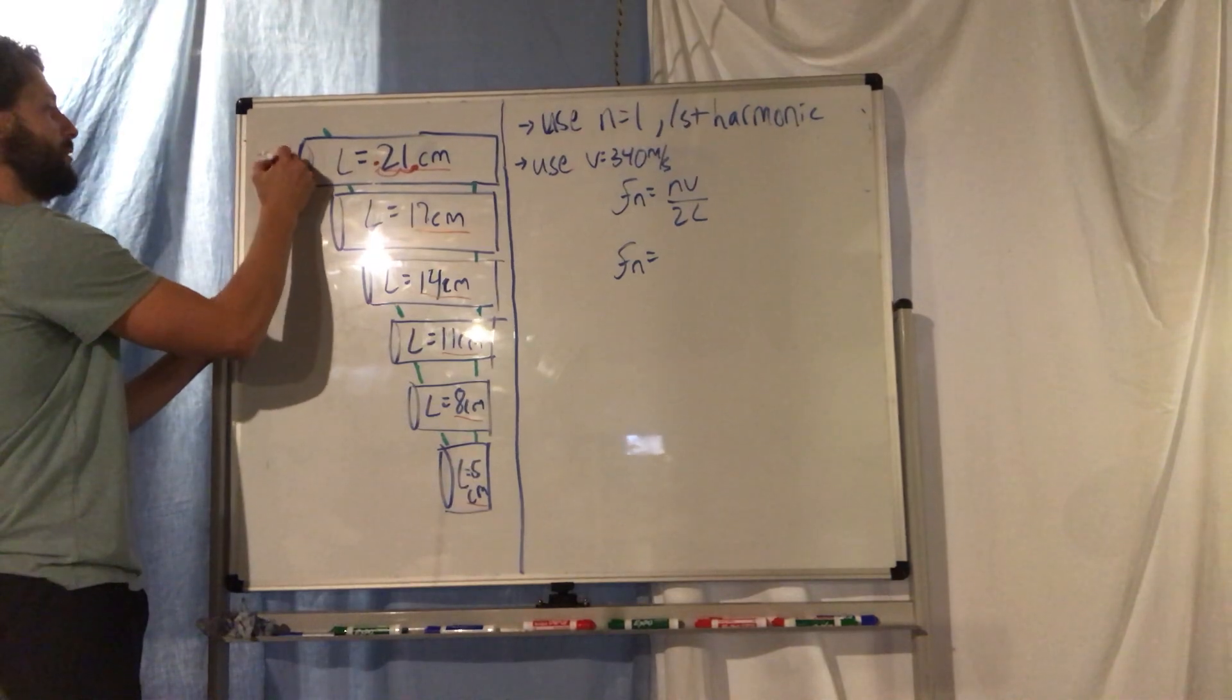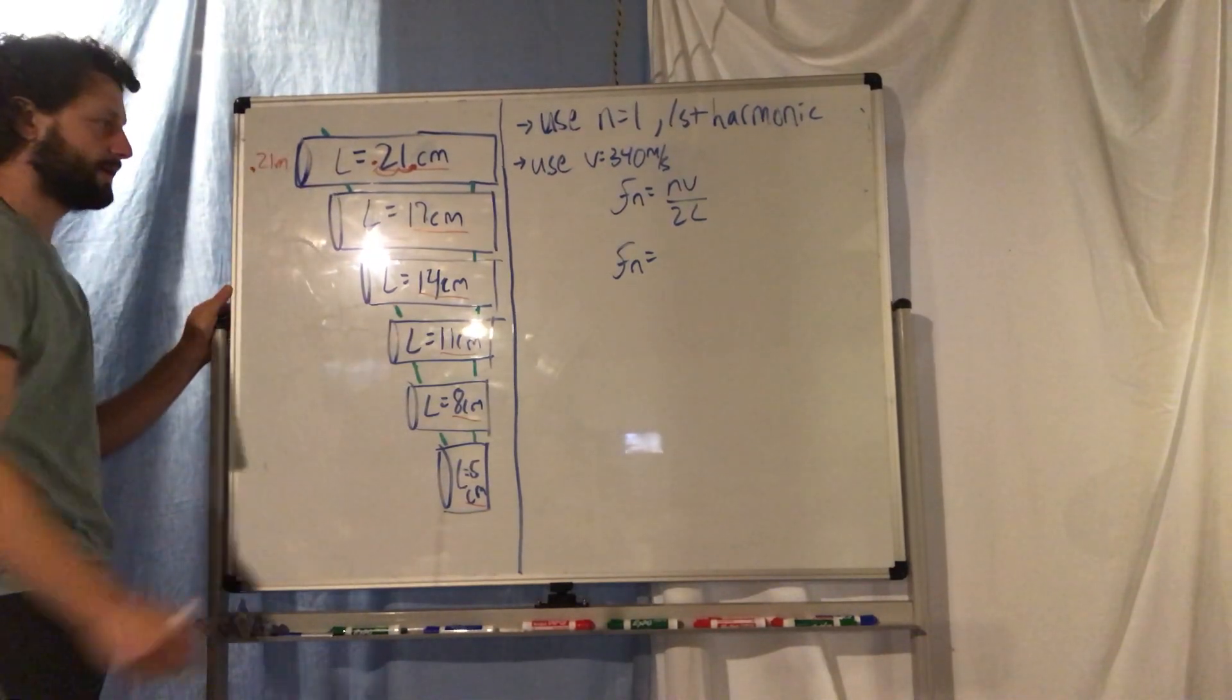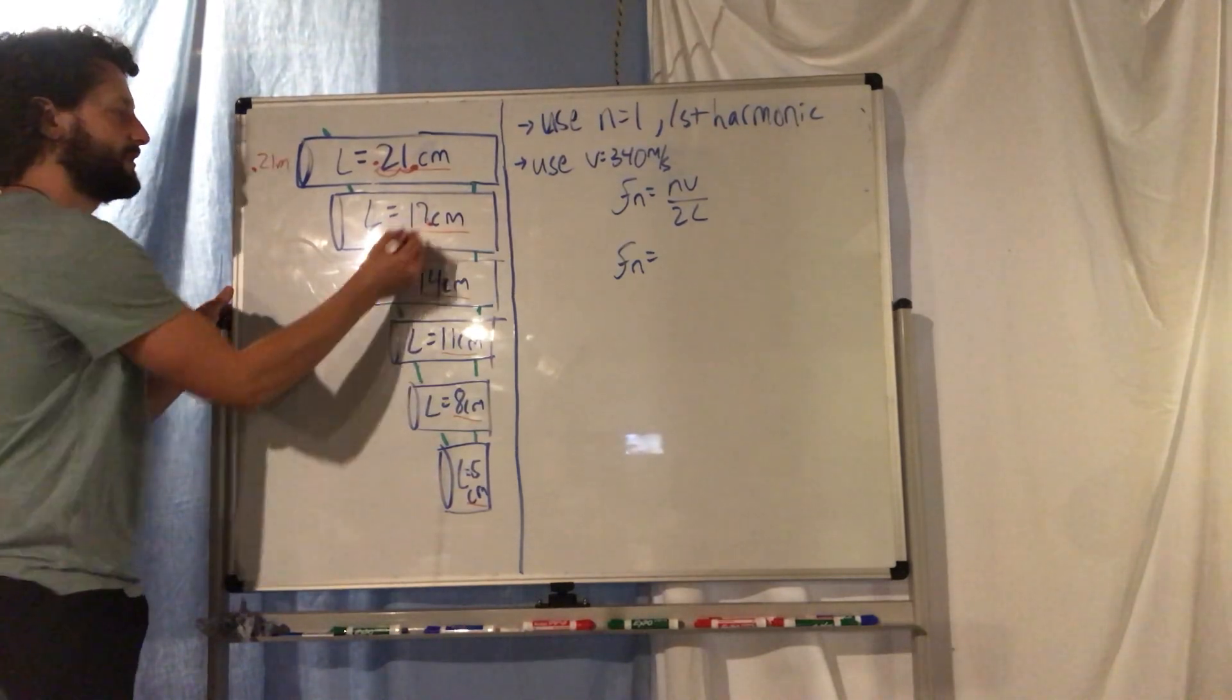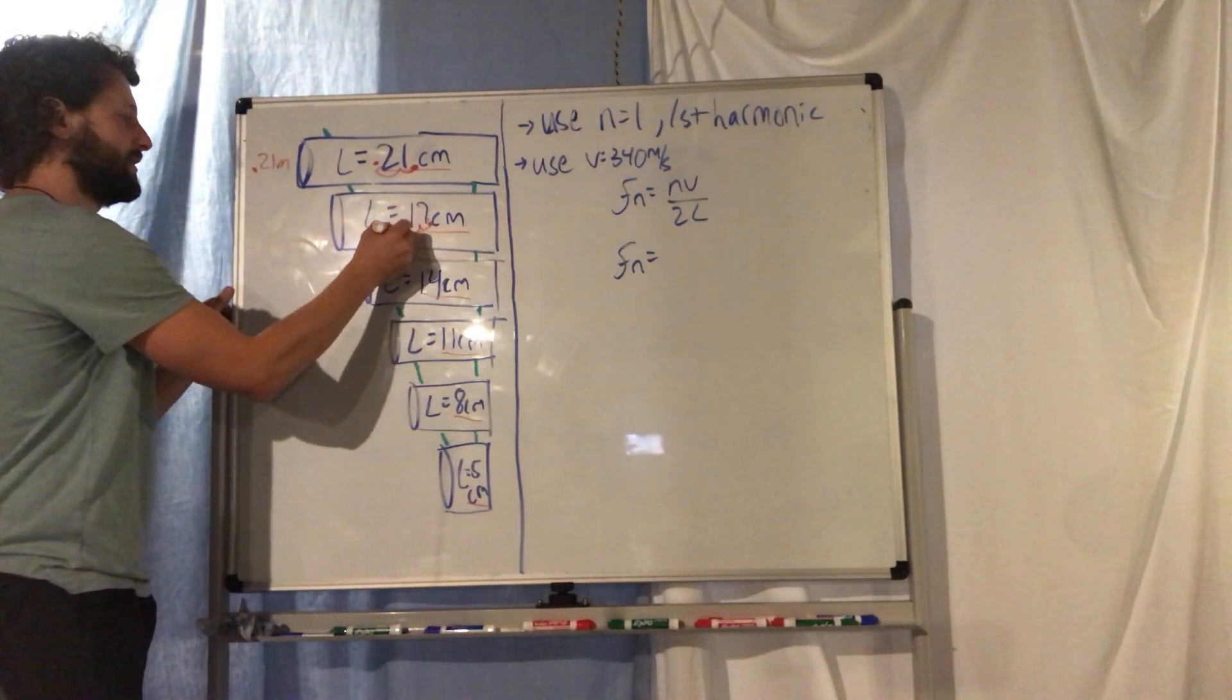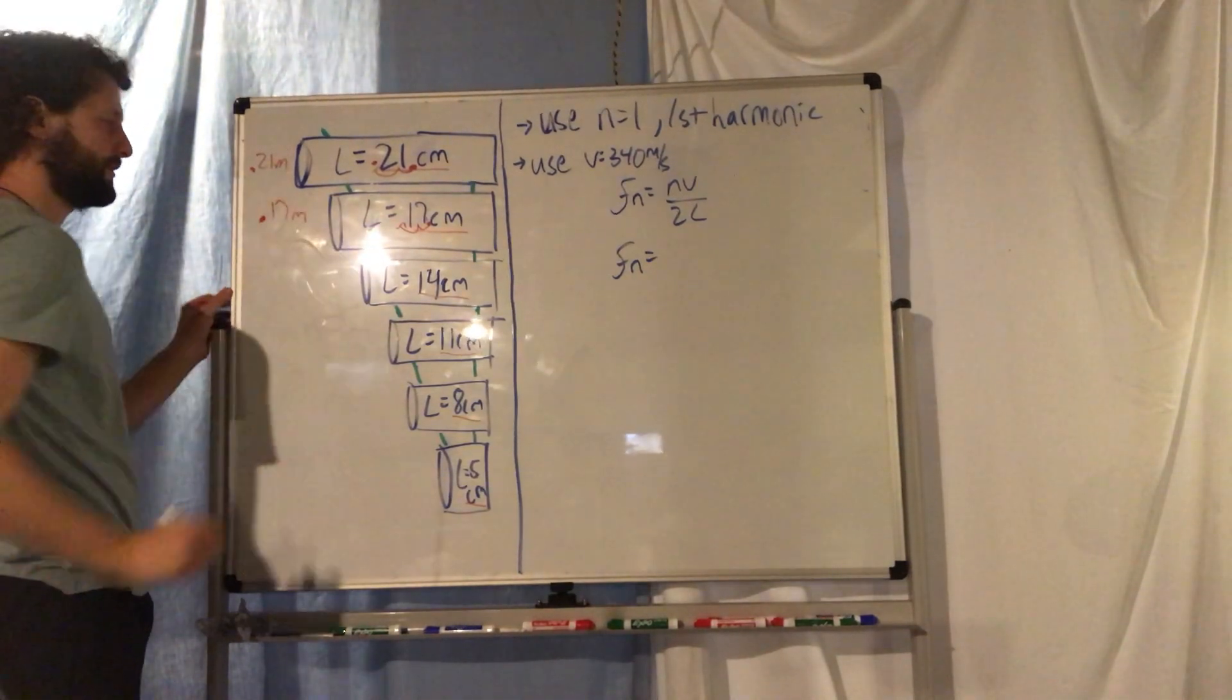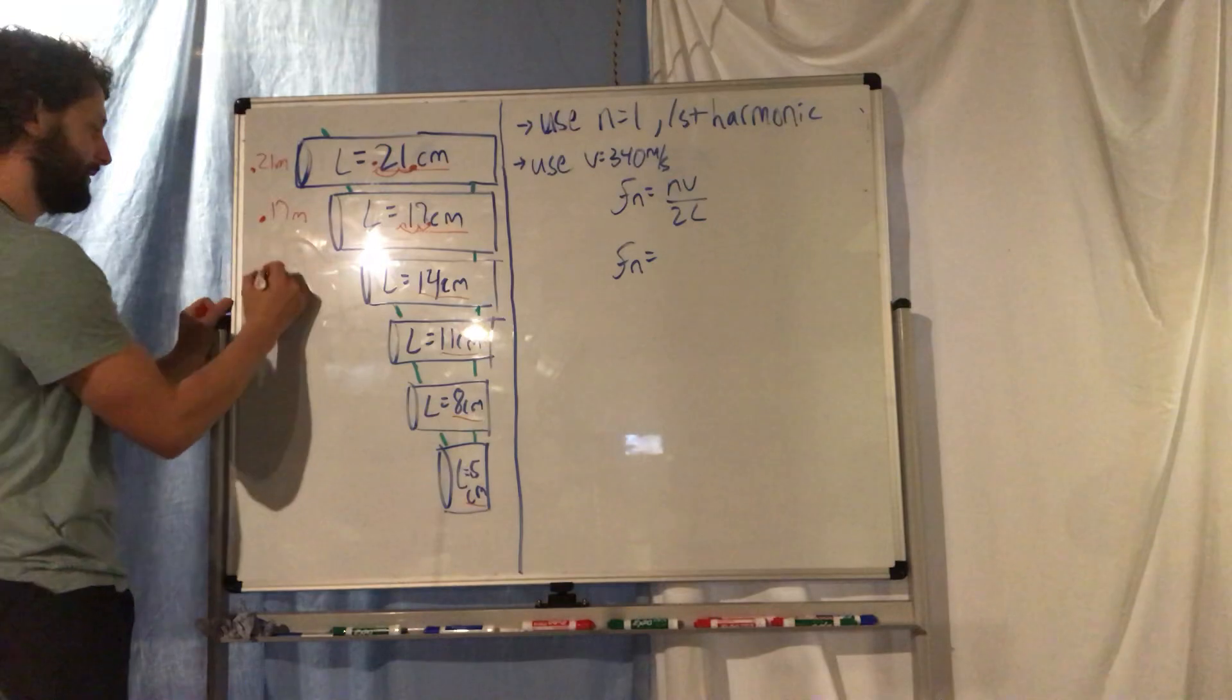So for my second tube, it's 17 centimeters. You have a different number. I'm gonna skip that decimal two spots to the left. I'm gonna get 0.17 meters.